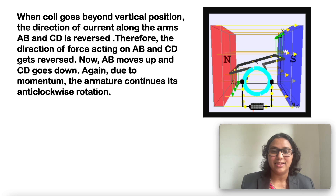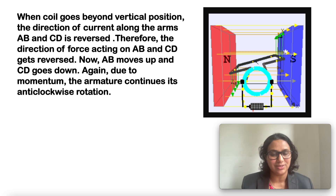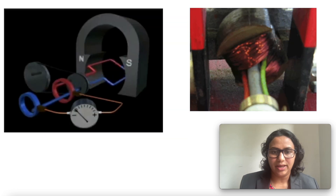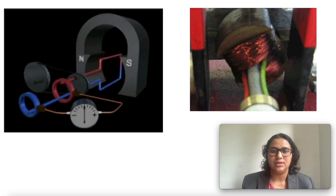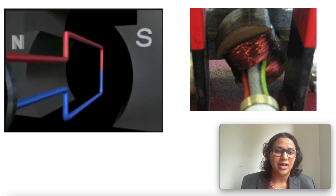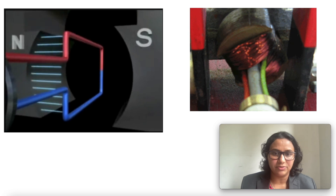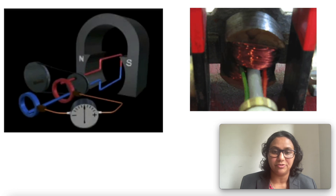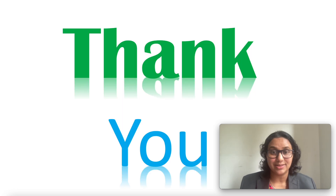The cycle continues as long as there is flow of electric current through the armature. An axle attached to the rotating split ring can be used to do work. In commercial motors, an electromagnet is used in place of a permanent magnet, and a large number of turns of conducting wire are used in the current-carrying coil to enhance the power of the motor. Thanks a lot.